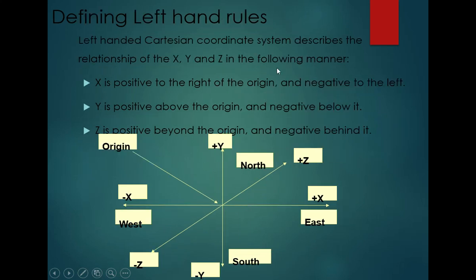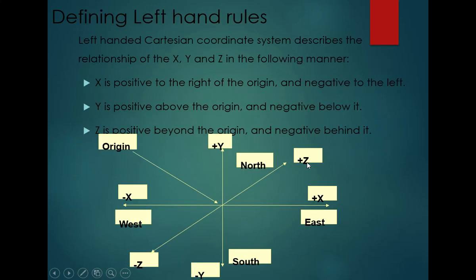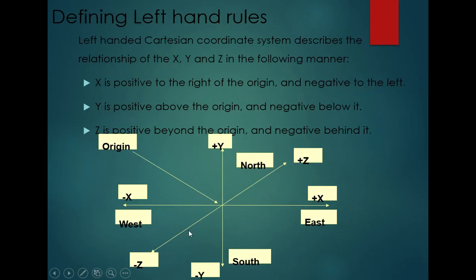If you compare with the left-handed rule: x positive is right of the origin and negative is left of the origin. Y positive is above the origin and negative is below. But in the left-handed rule, z positive is beyond the origin and z negative is behind the origin — the opposite of the right-handed rule.